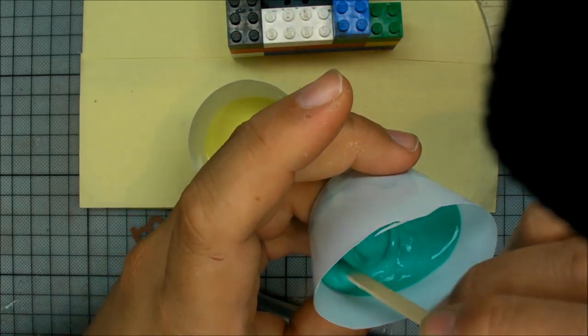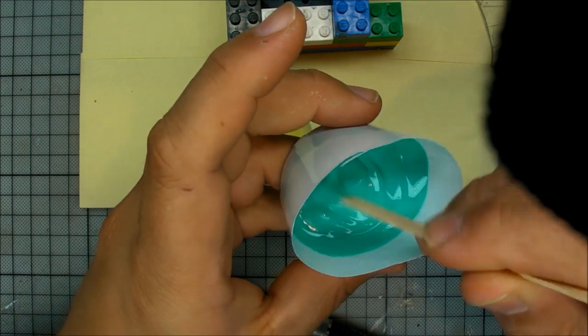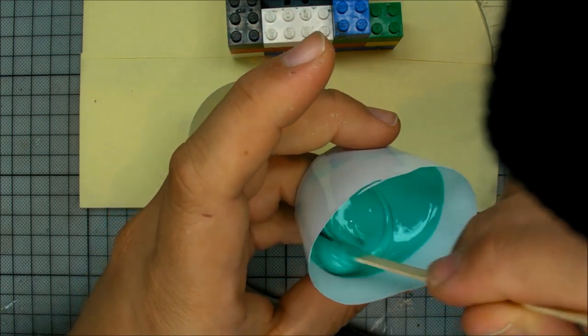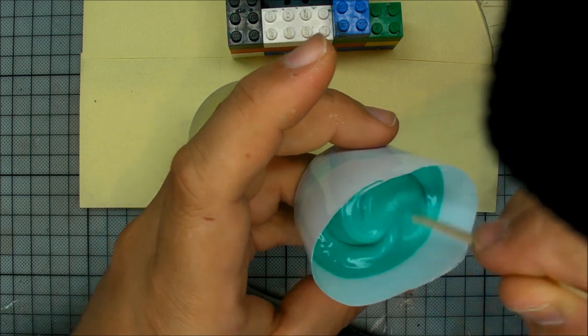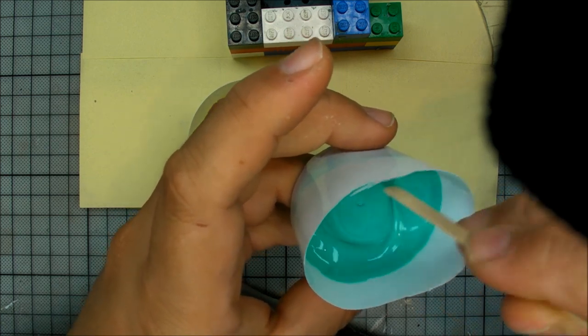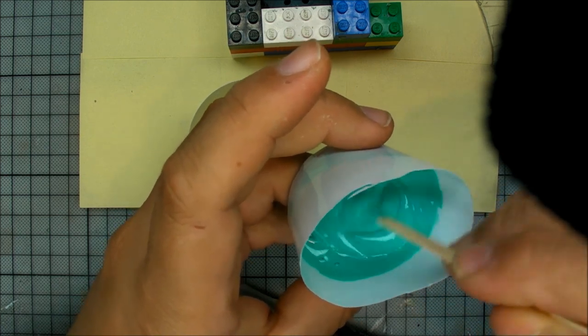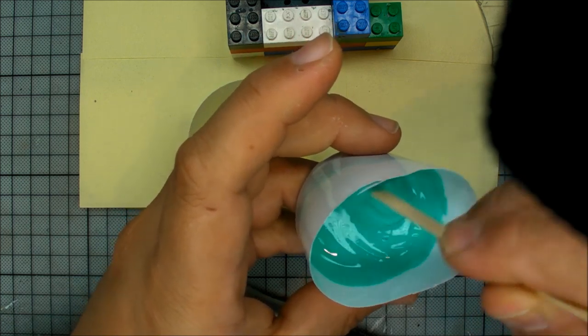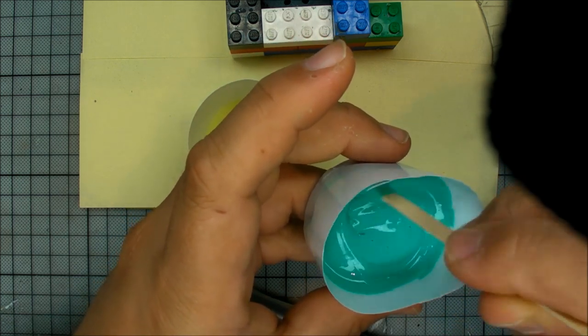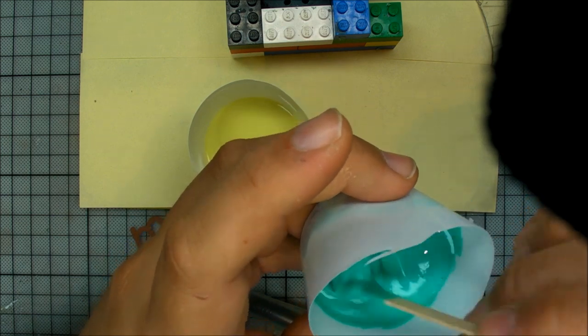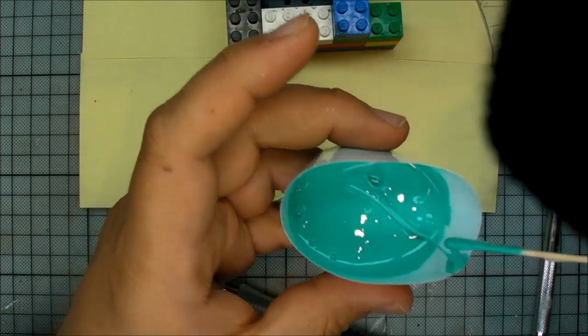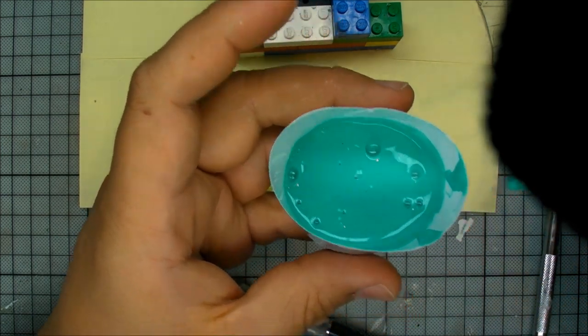Now right now we can do this for as long as we want to because nothing is going to happen to the silicone. As soon as you put those two parts together, you want to work quickly. You see right now, there's air bubbles starting to form as I stir this. Unfortunately, this is unavoidable, but we'll deal with this in a second.